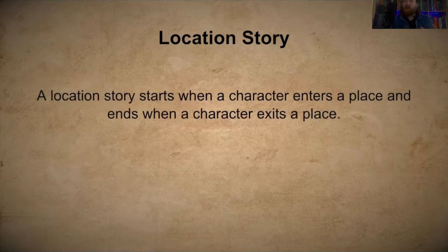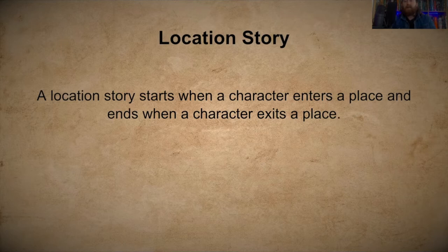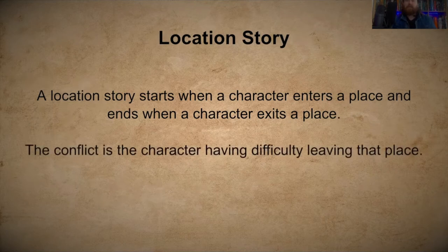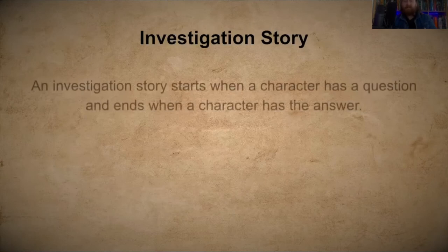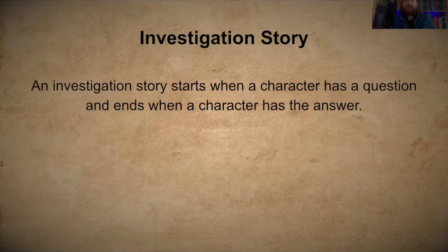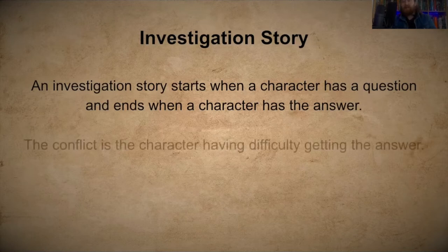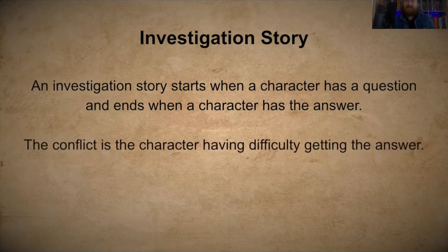When you know what type of story you're going to write, you know how it begins, how it ends, and therefore what type of conflict is going to happen in the middle. A location story starts when a character enters a place and ends when they exit the place — the conflict is the character having difficulty leaving. An investigation story starts when a character has a question and ends when the character has the answer — the conflict is having difficulty getting that answer.